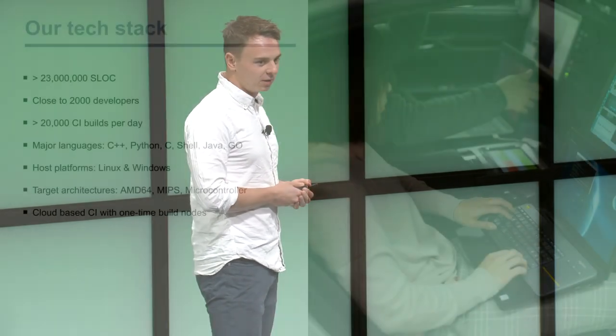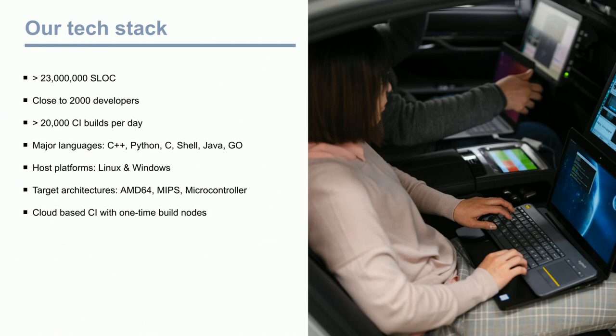In the last three to four years, we grew a lot. Now we have more than 23 million lines of source code. Close to 2,000 developers are working on that software stack, and that results in more than 20,000 CI builds per day. We mostly code in C++ and Python these days, but you'll find all sorts of programming languages in our software stack.